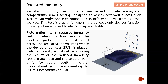This test is critical to ensure that electronic devices function properly when exposed to real-world electromagnetic fields. Field uniformity in radiated immunity testing refers to how evenly the electromagnetic field is distributed across the test area where the DUT is placed. As shown in this diagram, this is a four-by-four grid — 16 points in total — which is the test area where you place your DUT. We need to ensure these 16 points are evenly distributed, with a maximum difference of only ±6 dB.